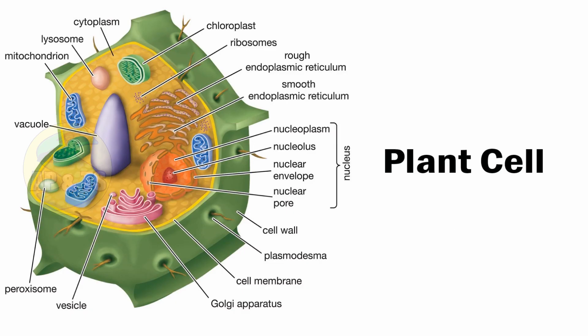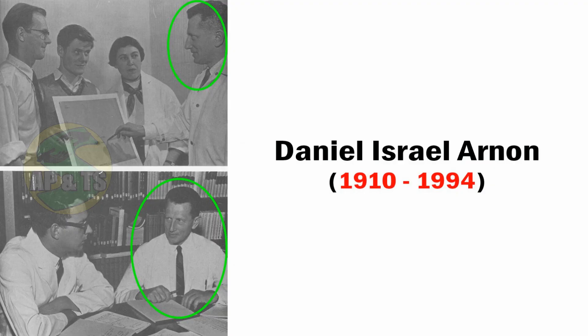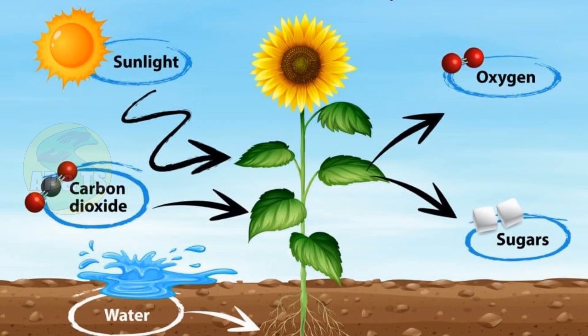If a plant cell is broken, then the chloroplasts also break into pieces, so it will be difficult to study the different steps involved in the process of photosynthesis. But in 1954, a scientist named Daniel Israel Arnon broke the plant cell gently and was able to separate the chloroplast from it to study the process of photosynthesis.